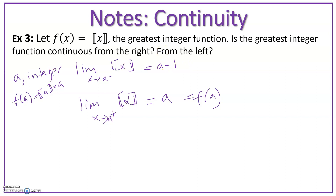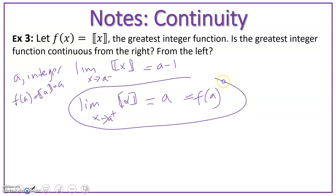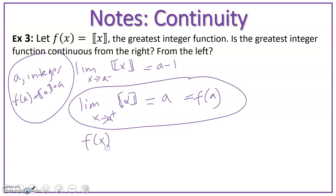So once again, with our greatest integer function, we can see that because the limit from the right-hand side is equal to a, which is where f of a is defined at if a is an integer, we can see then that f of x, our greatest integer function, is continuous from the right.